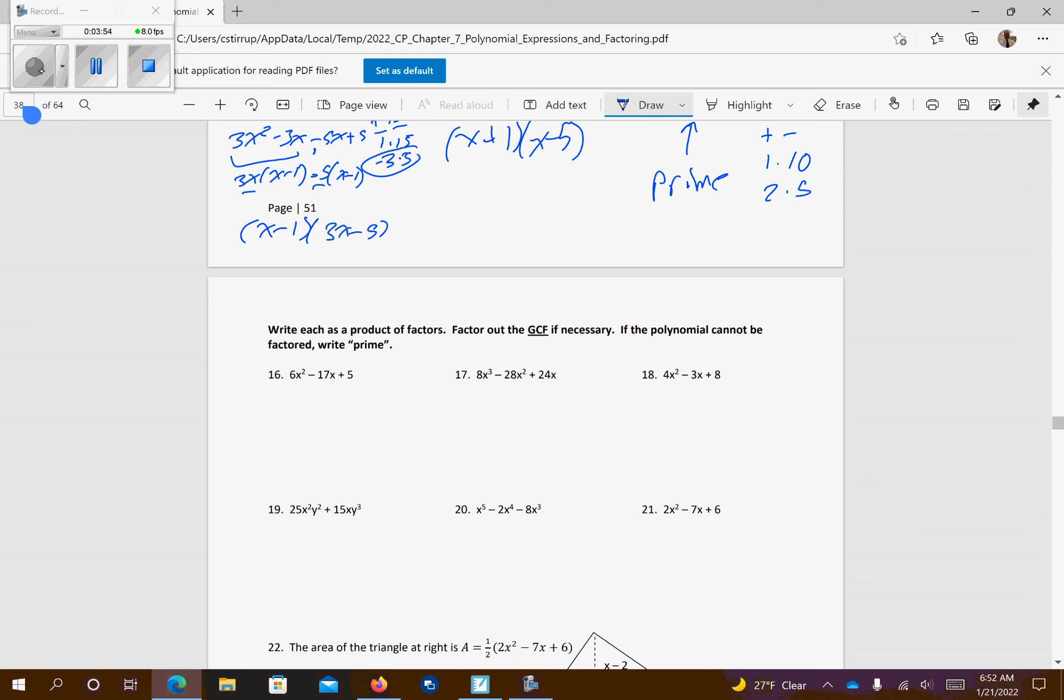Number 17, we want to factor out the greatest common factor first. So we're looking at this and we're like, well I can factor an 8x out of everything. Excuse me, it's not 8x. I apologize. It will be a 4x. That's going to leave me 2x squared minus 7x plus 6. So 4x is part of our answer. So I'm going to bring this down here. So I list our answer down here for number 17. We're going to multiply these together. So I'm going to get positive 12. This is negative, so they both need to be negative.